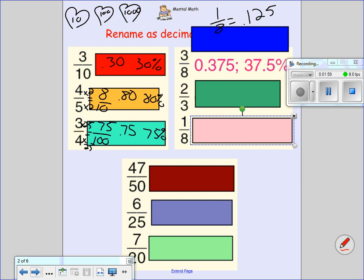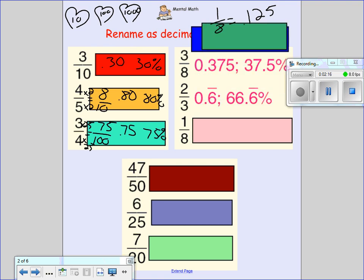2 thirds, I've been teaching you this for a long time now, 1 third equals 0.333 continuous, which would look a lot like 33.3 percent. So I'm going to have to multiply that by 2 kids to get 2 thirds, which would give me an answer of 0.6 continuous, or 66.6 percent.